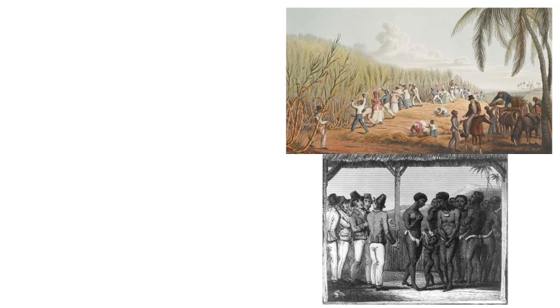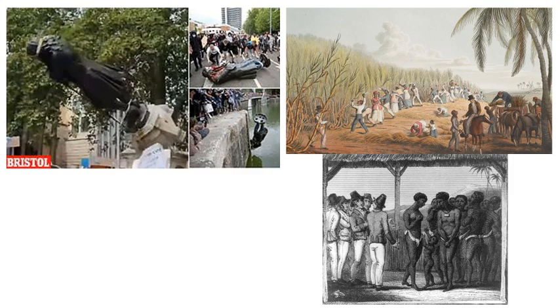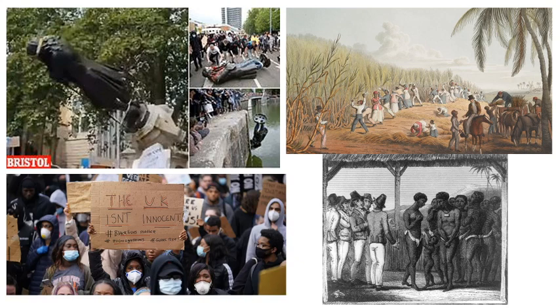In Bristol over the weekend, this happened — the toppling of a statue still held in esteem in Bristol, which was of a slave trader, and that was ripped down. What we can see is this idea of the UK not being innocent in its treatment of minorities, but especially people of black African origin who were transported around the world as a result of slavery and who are still treated in a derogatory and second-class way in many of these former slave-owning countries and states.